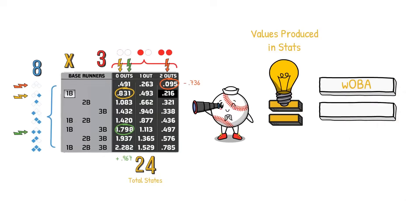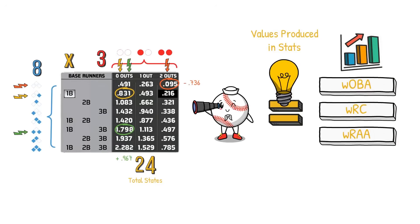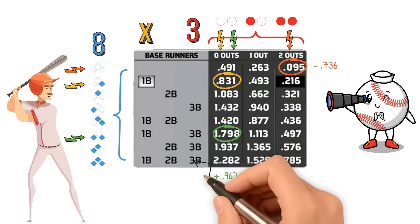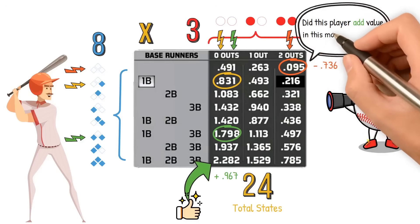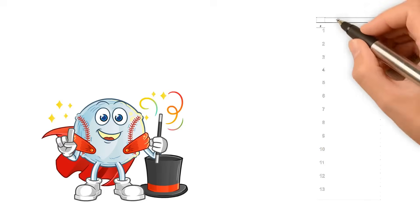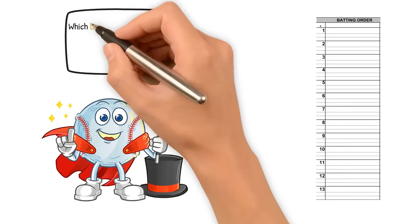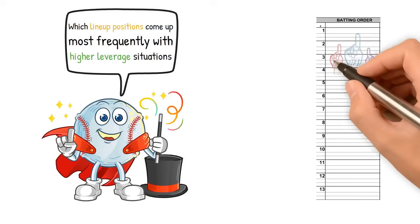This is the same idea that goes into the values produced in stats like wOBA, weighted runs created, or weighted runs above average — how much does a certain outcome improve our team's expected ability to score more runs? Better hitters will help create better expected outcomes. You can use RE24 to answer the question: did this player add value in this moment or lose it? And you can take this further to see which lineup positions come up most frequently with higher-leverage situations, and line up your best hitters there.